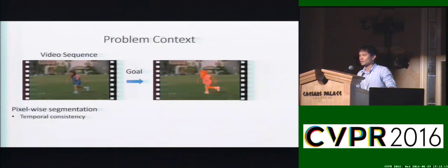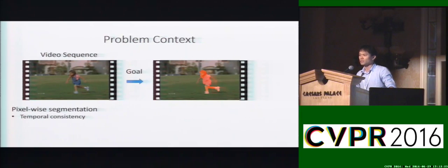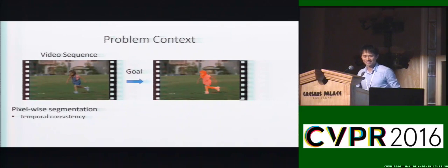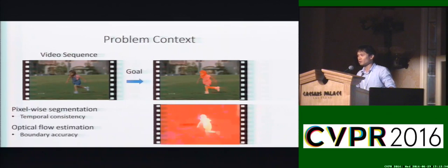The problem we are solving is: given a video sequence and an initial segmentation of the object, we want to segment and track the object at the pixel level. This process usually requires temporal consistency. Moreover, we also want to estimate the object flow, especially around boundaries.